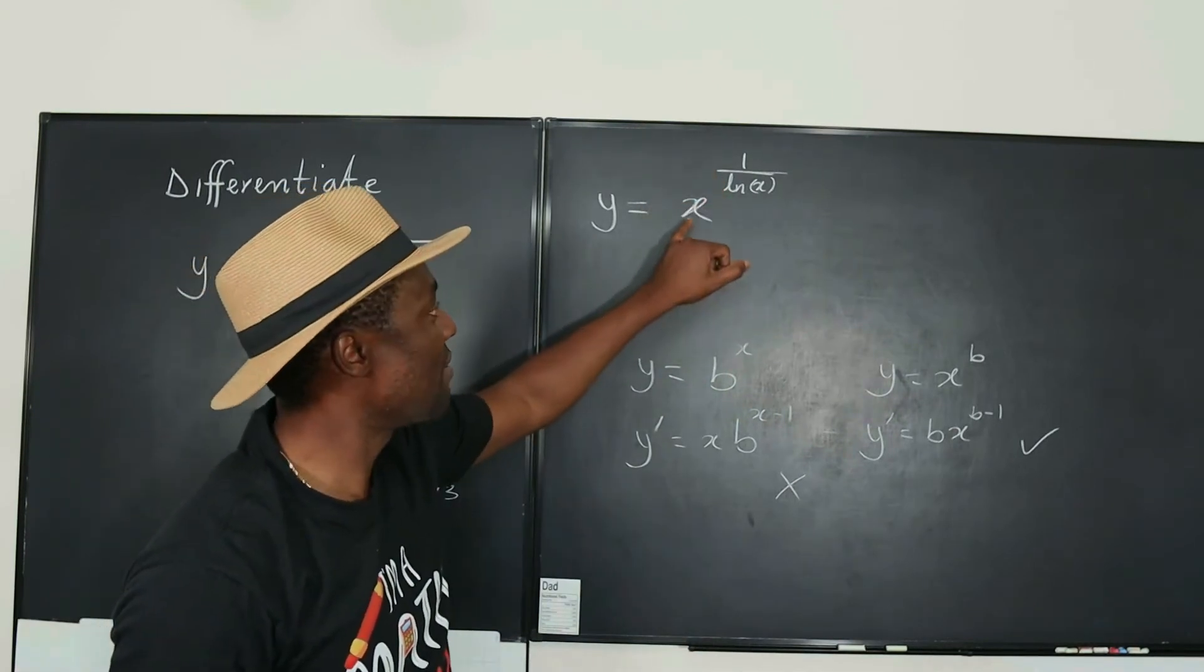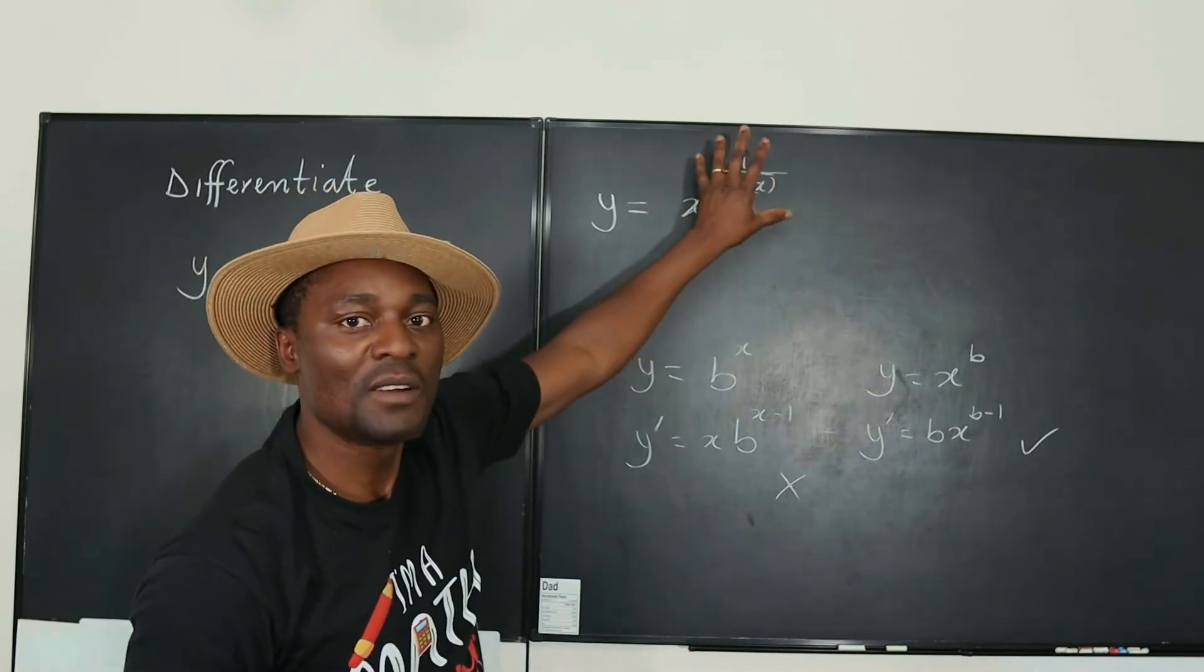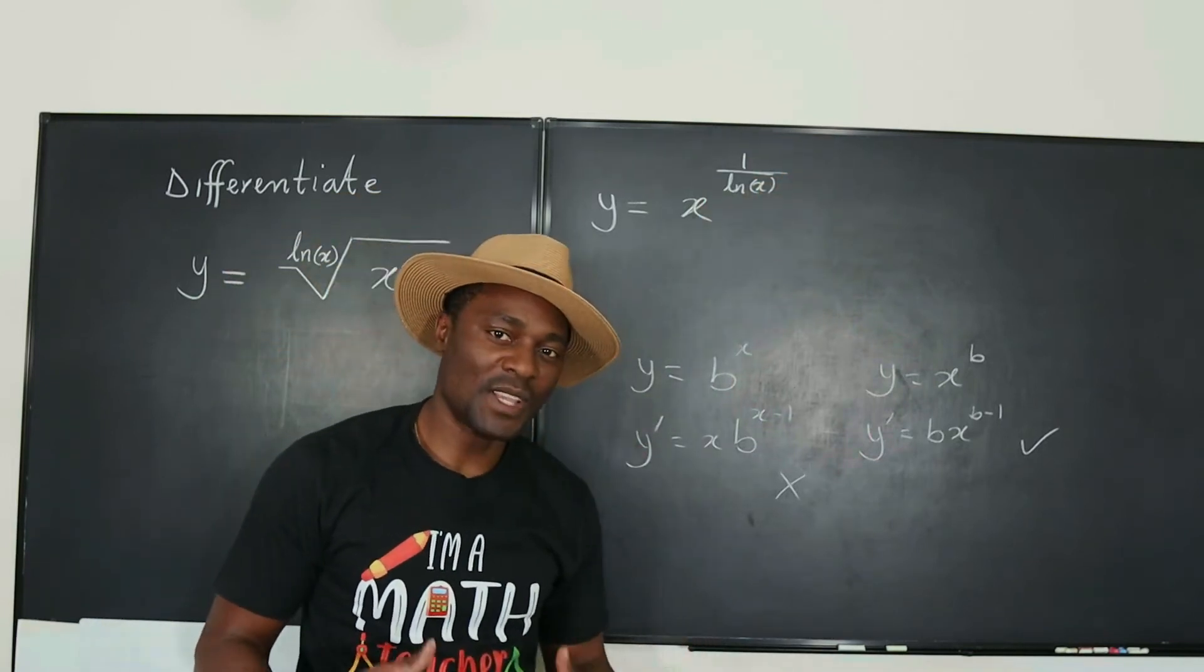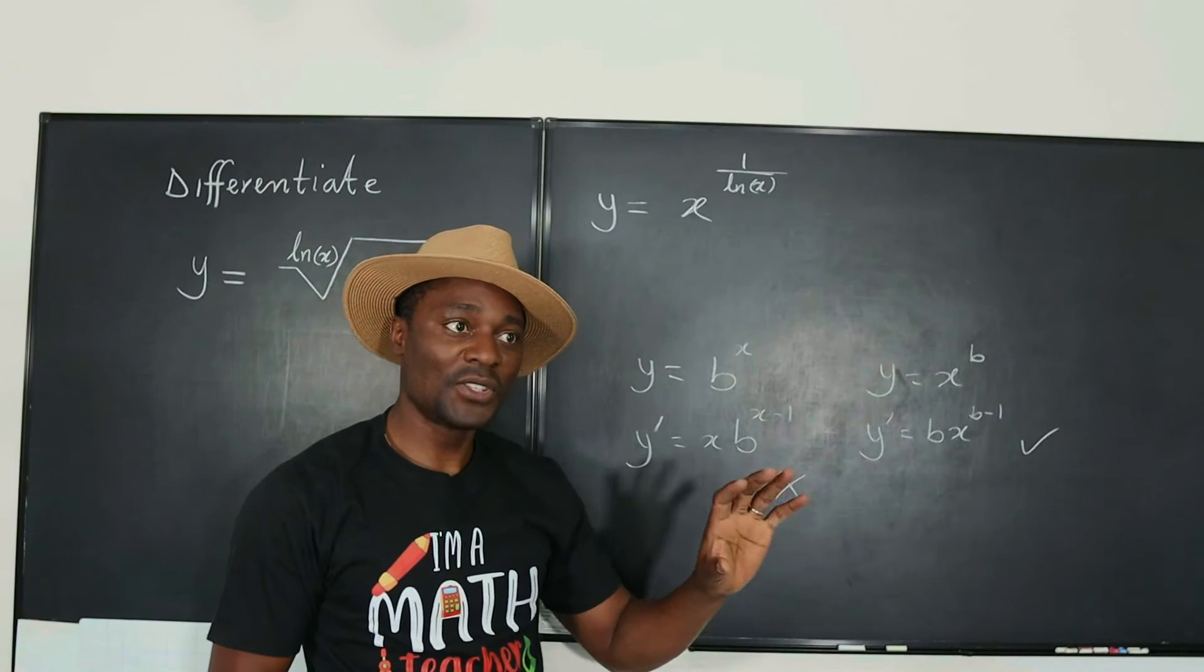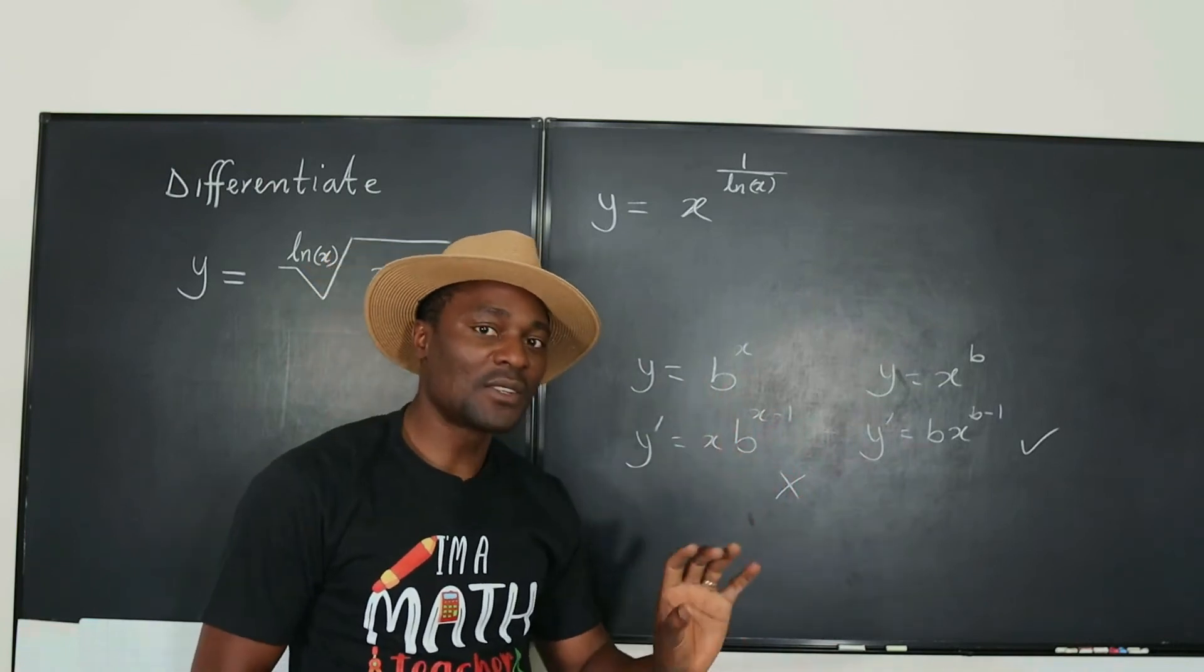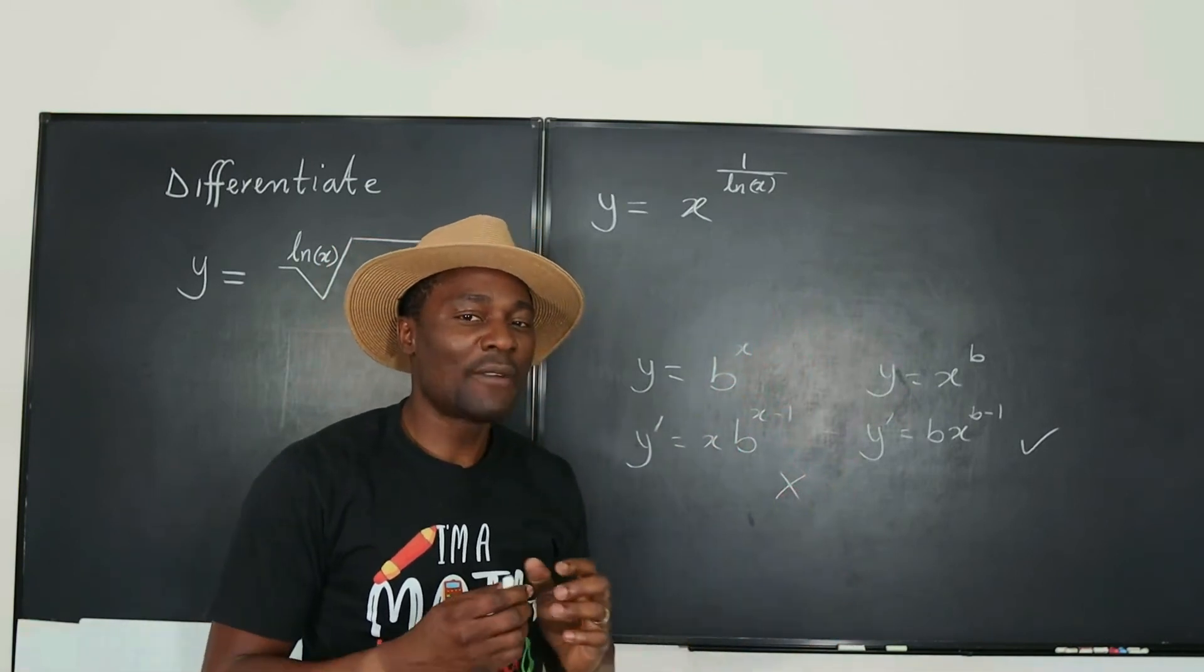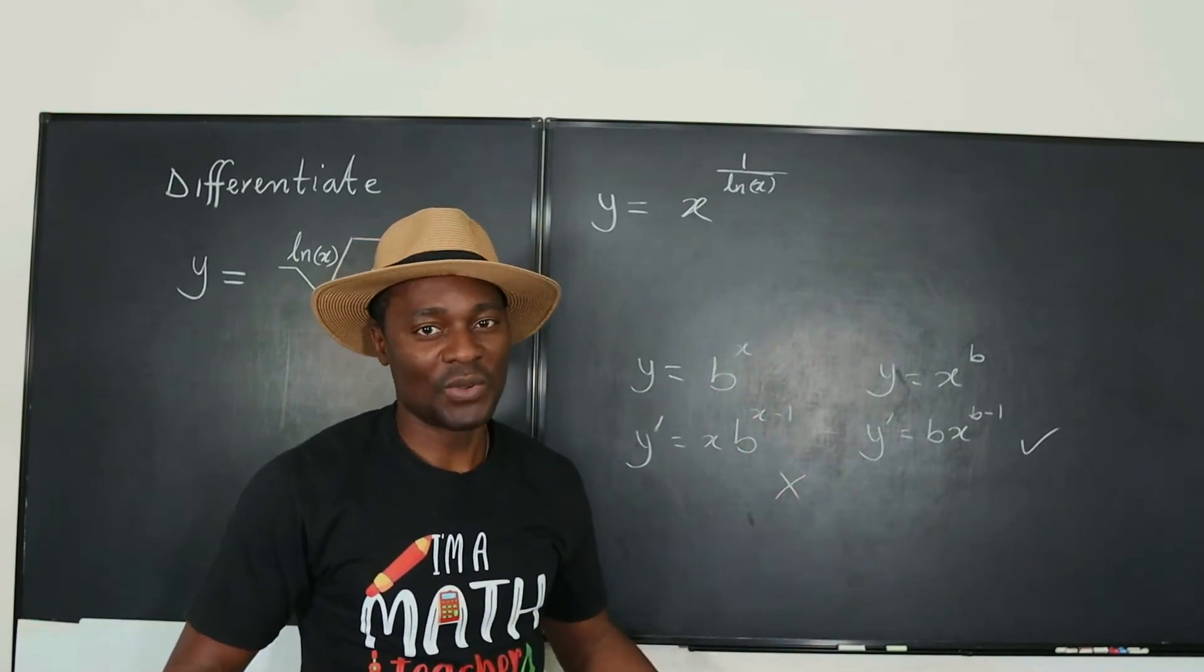It's even worse because now we have a variable raised to a function. So a function raised to a function. If you've seen my other videos, I did explain that when you have a function raised to a function, or a constant raised to a function, as long as the exponent is a function of x itself, you have to introduce logarithms.